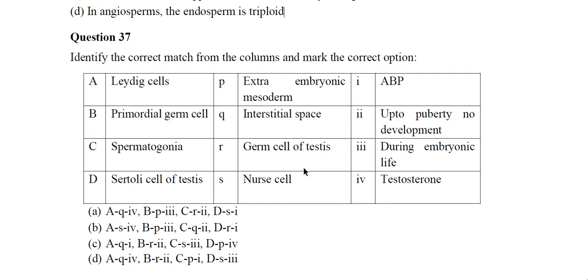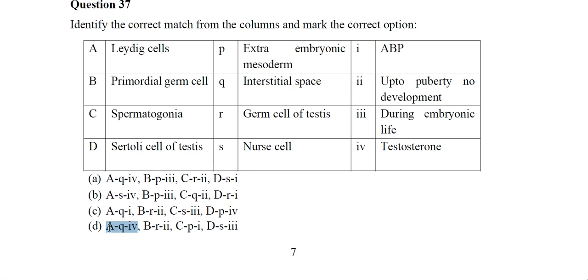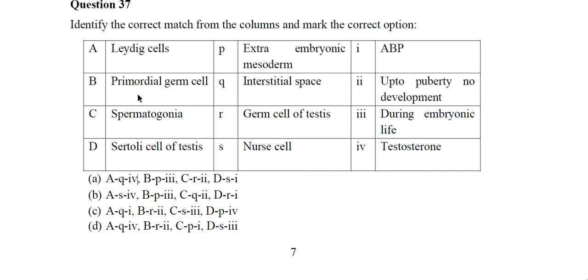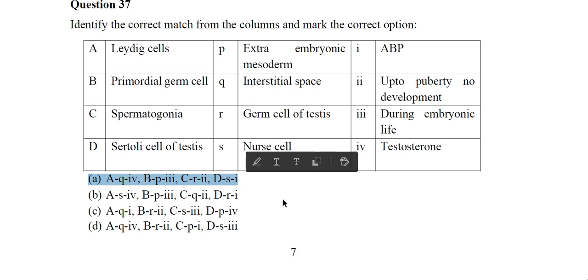Question 37: A chart is given. The correct answer is option A. Leydig cells, interstitial space, and testosterone are present in option A and also D, but checking other options — primordial germ cell, extra-embryonic membrane, and embryonic lab — option A is the correct answer.